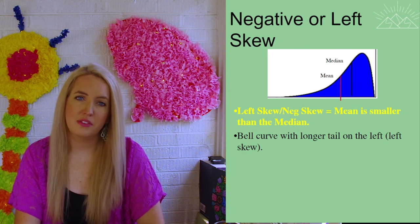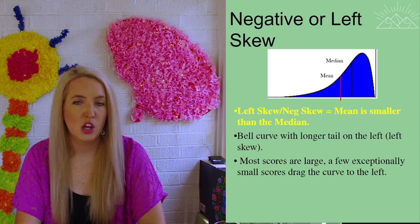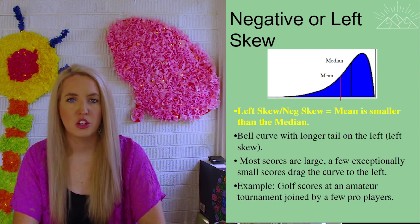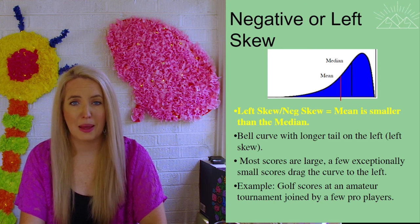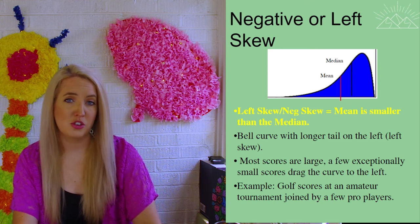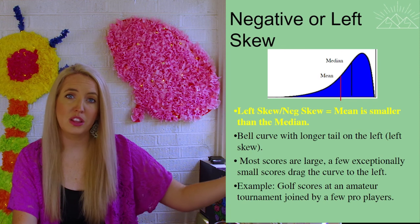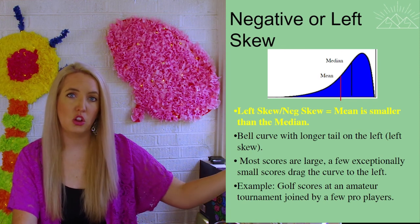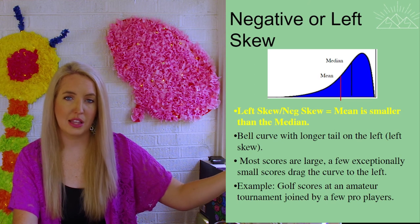You can think of an example of this, such as an amateur golf tournament where one pro golfer joins in the competition. In golf, the lowest score wins. So while all of the other scores might be higher, our one professional golfer might have a really, really low score. And that's going to pull the average score down. That's why we see that long tail being pulled to the left.